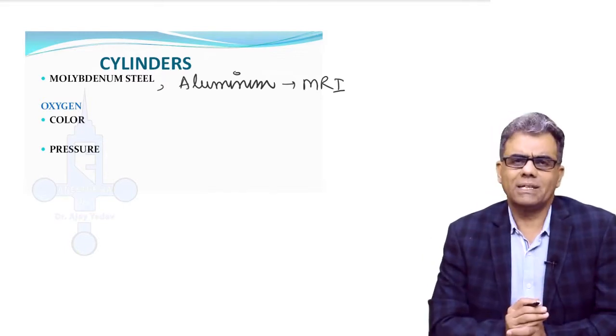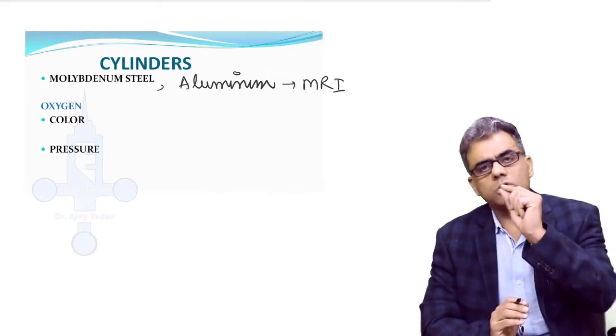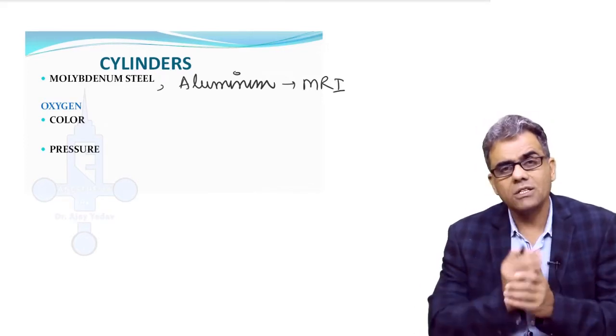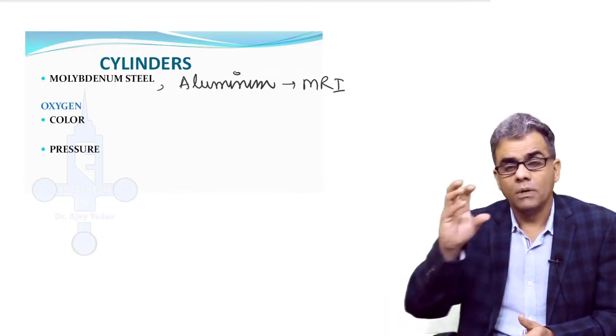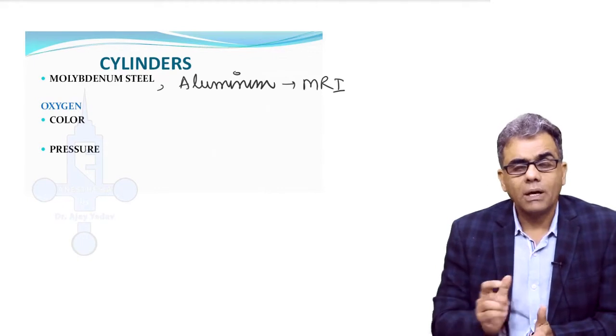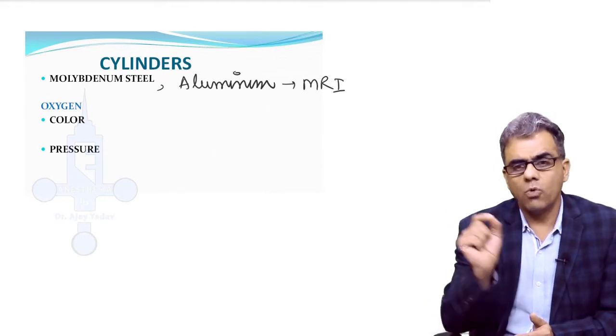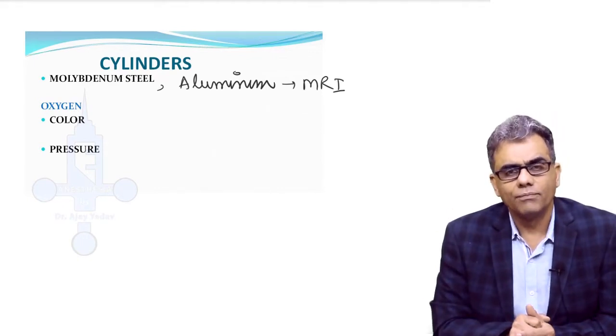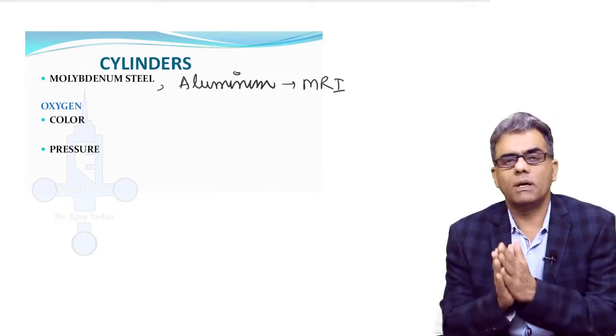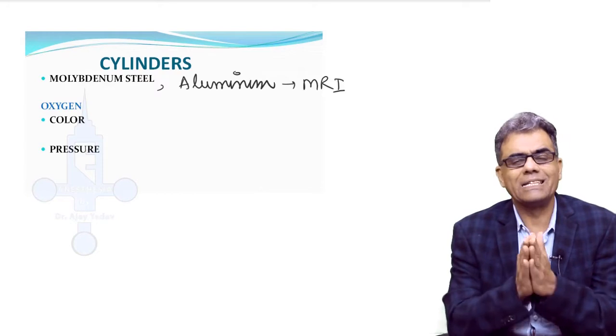Now regarding cylinders, the two most important things that you have to know: one is the color and second is the pressure. Color is not only important from your question's point of view, color is also very important from clinical point of view because color is the only criteria to identify cylinders. Those who have done internships would have seen that the only method to identify a cylinder is by color.